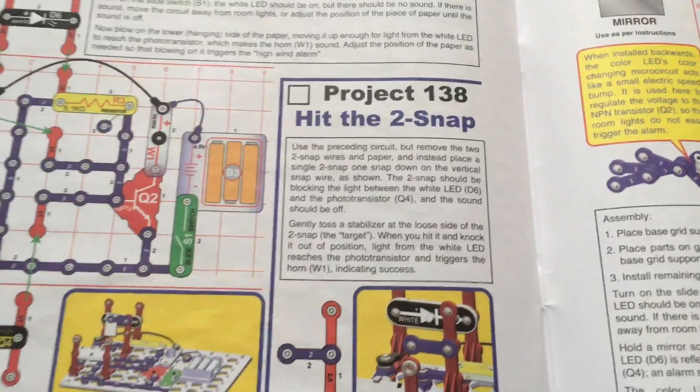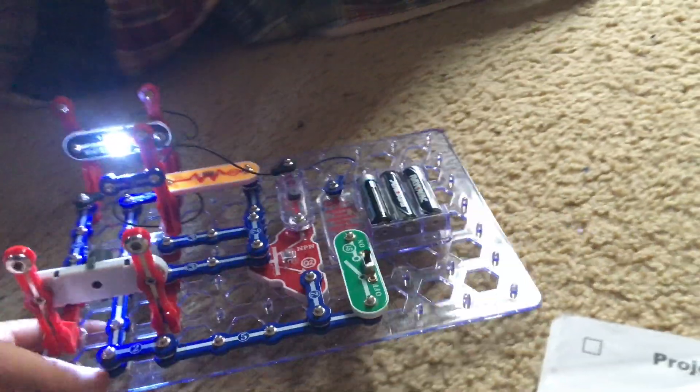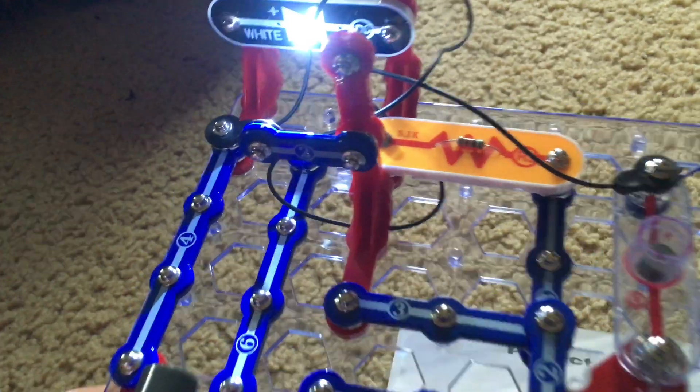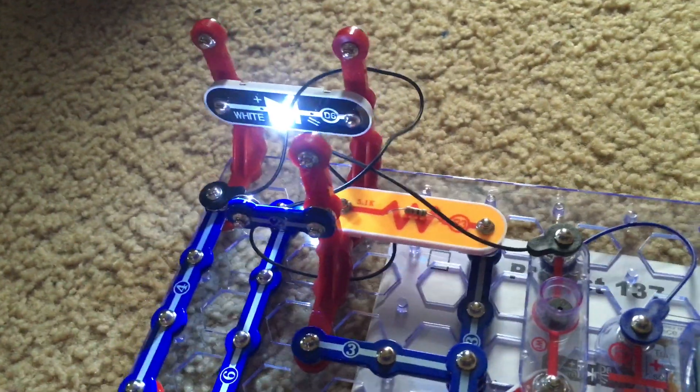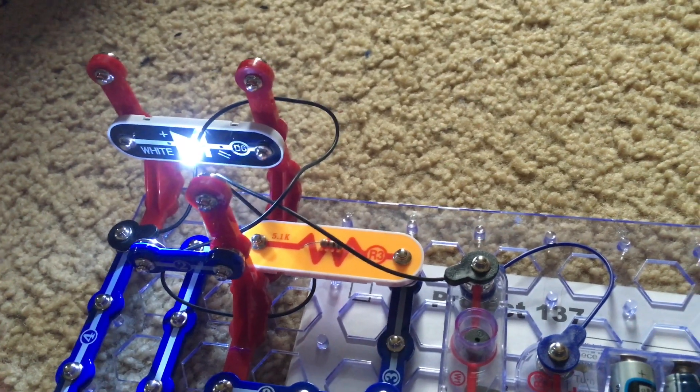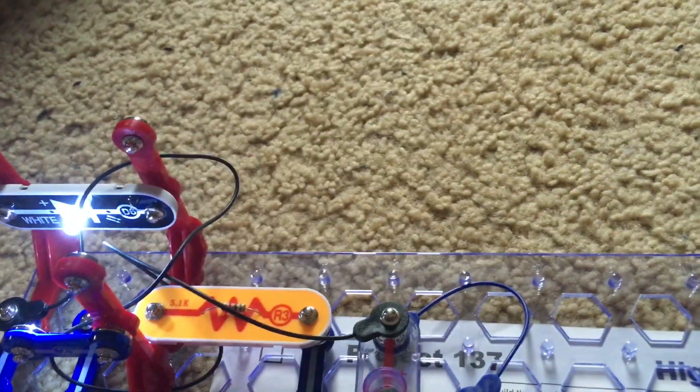138 hit the two snap. We will modify the preceding circuit by removing one of the two snap wires mounted on this vertical snap here and move it down to the center level of the vertical snap and have it so it is just blocking the light to the photo transistor from the white LED.